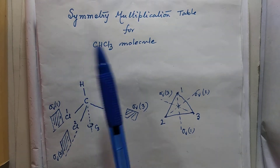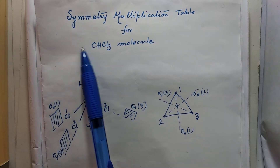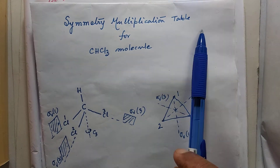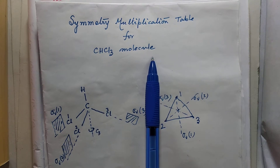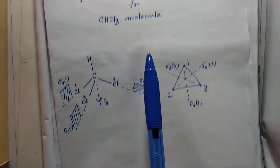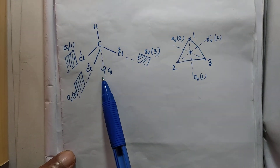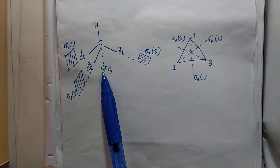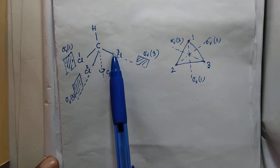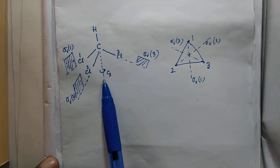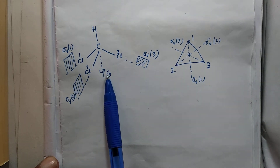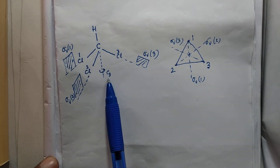Today I will discuss the symmetry multiplication table for the chloroform molecule. It is a tetrahedral molecule. The C-H bond acts as a threefold rotation axis, C3.